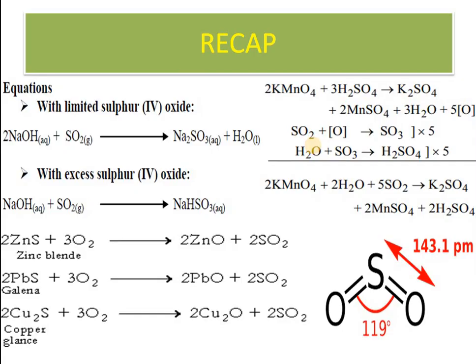To recap: NaOH + SO₂ → Na₂SO₃ + H₂O. Reactions are the most important part of this topic, so please concentrate on them. The KMnO₄ method with coefficients 2, 3, 1, 2, 3, 5 was discussed, and the partial equation method can be applied to balance such equations.